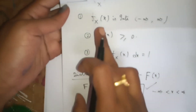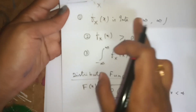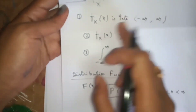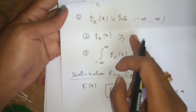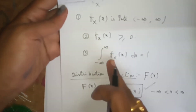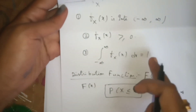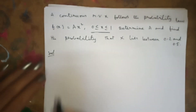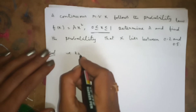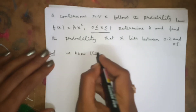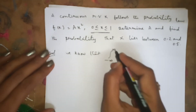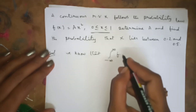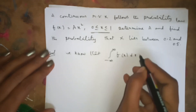To do this problem, we use the definition of PDF. The PDF definition states: f(x) is always integrable, f(x) is always greater than or equal to 0, and the integral from minus infinity to plus infinity of f(x) dx is always equal to 1. We know that integral from minus infinity to plus infinity of f(x) dx equals 1.